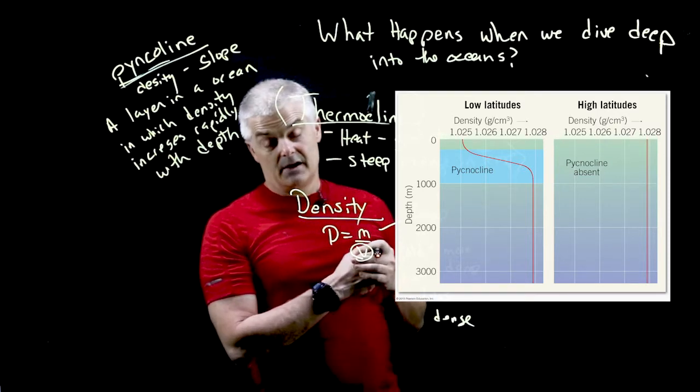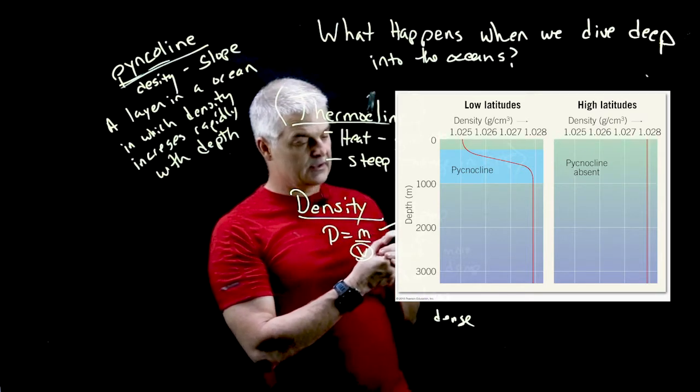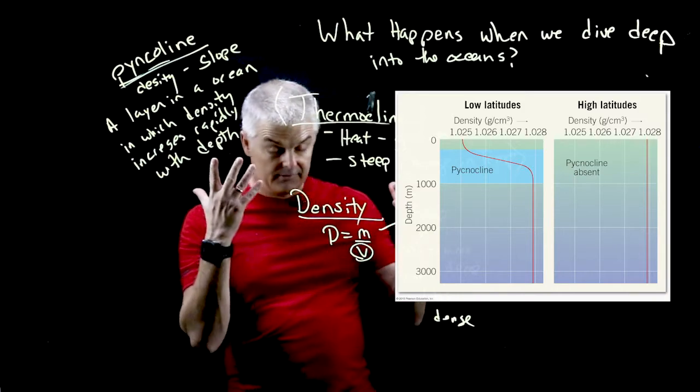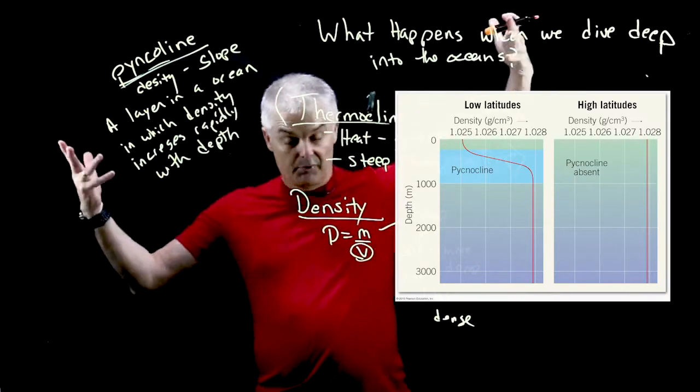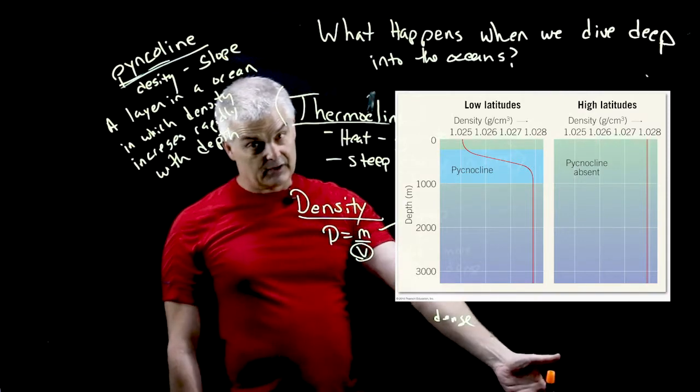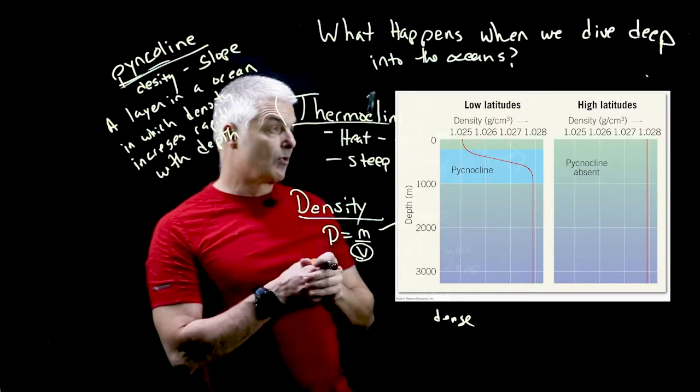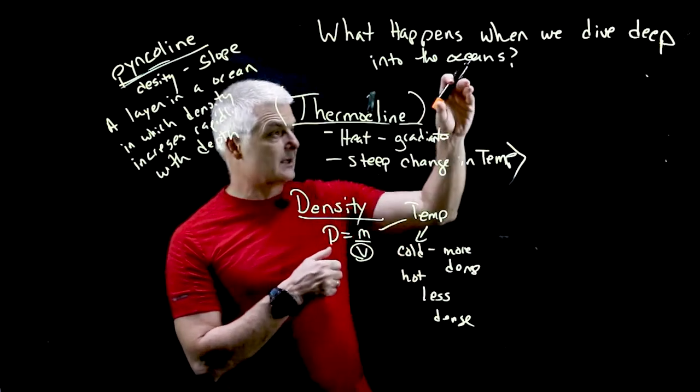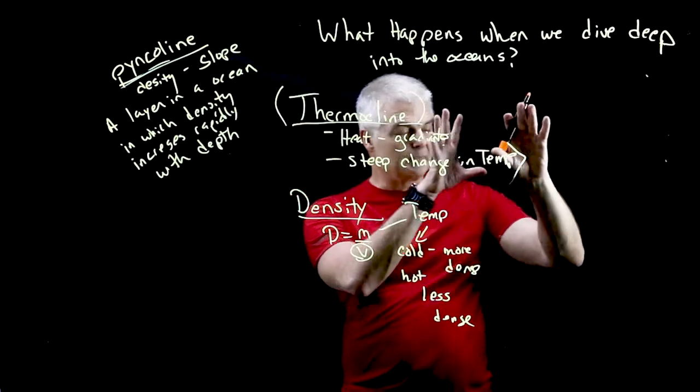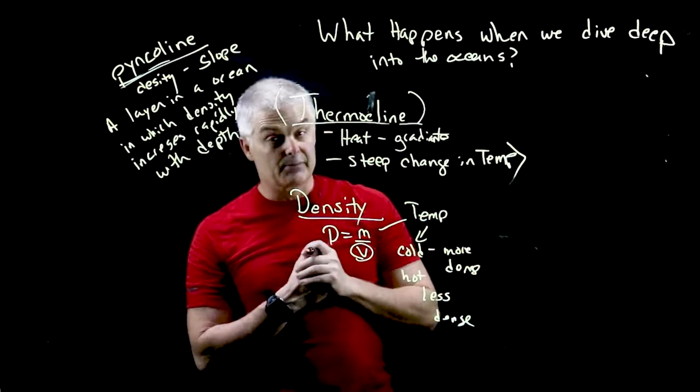Now you'll notice this looks a lot like the thermocline graph, right? Because it follows. The cold water is more dense. Now remember at the top of the polar regions, the water's cold. And so it's more dense consistently. And then it becomes less dense when you get to the warmer waters in the tropics. But you can see, again, it follows that the thermocline thing and the pycnocline thing are very similar. They follow the same thing because they follow the temperature.